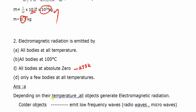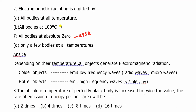Depending on the temperature, all objects generate electromagnetic radiation — it is temperature dependent. Colder objects emit in the low frequency range, and hotter objects emit in the high frequency range. So the answer is A: all bodies at all temperatures emit electromagnetic radiation.